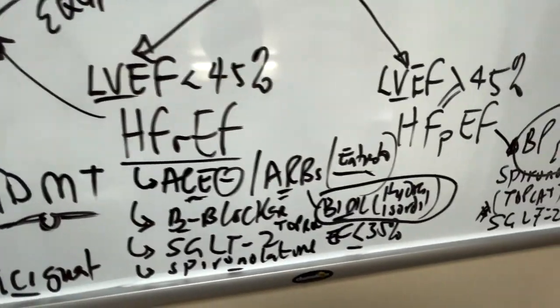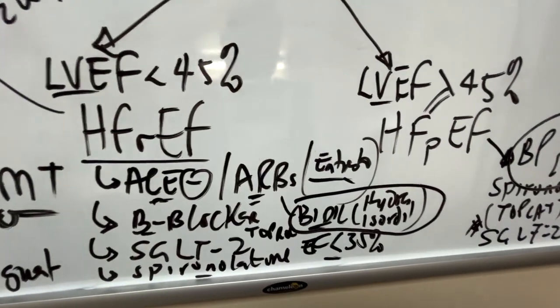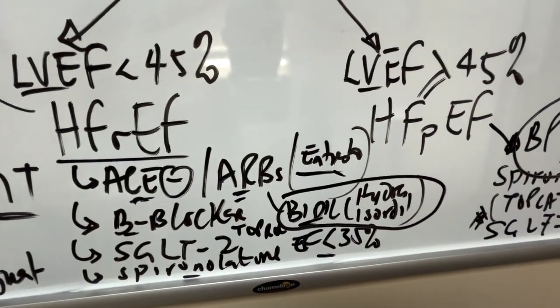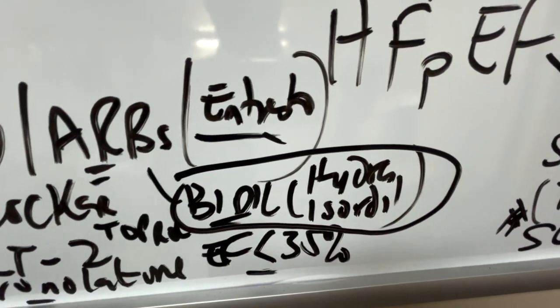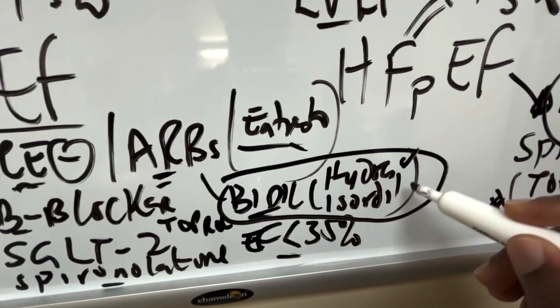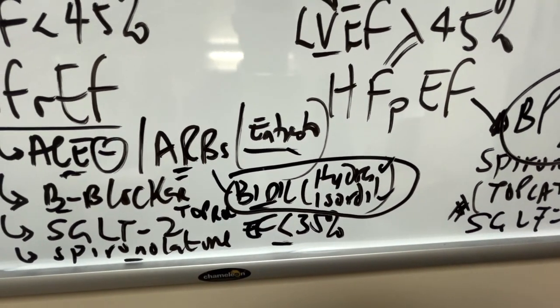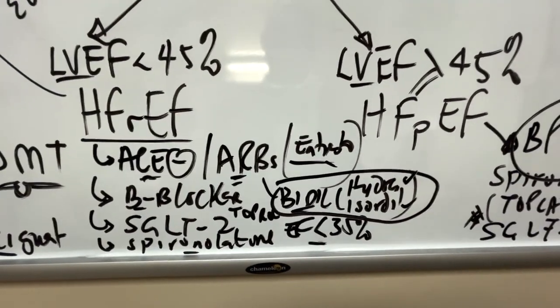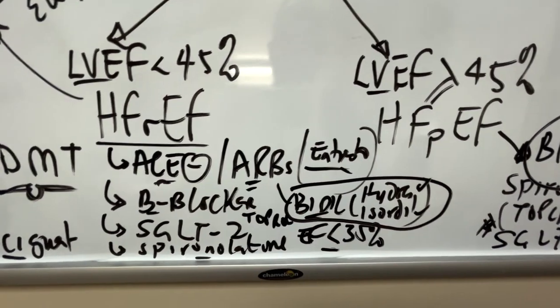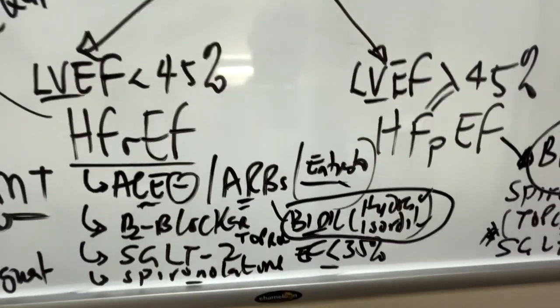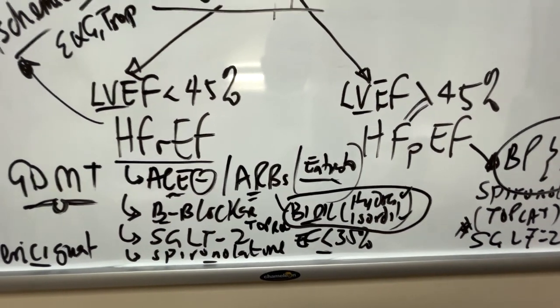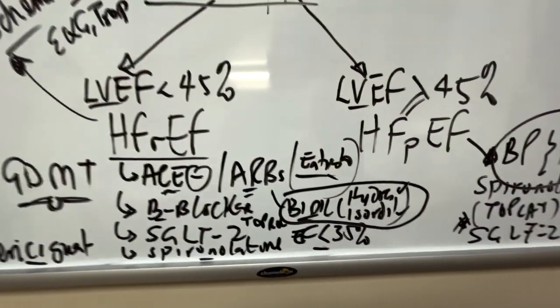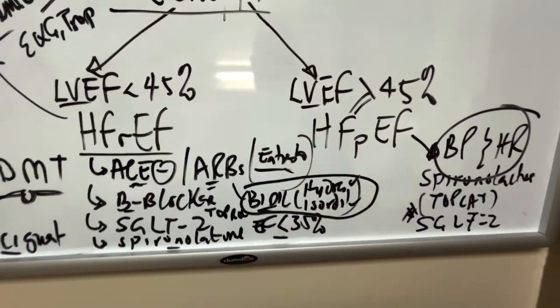BiDil, the two dilators hydralazine and isosorbide dinitrate, are preferred alternatives in patients with angioedema, hyperkalemia, or very bad renal failure. These are believed based on data in the early 90s to be preferred in African-American populations, but still they're not first line. They're an alternative, but if you have an African-American patient, it just works better in that case.